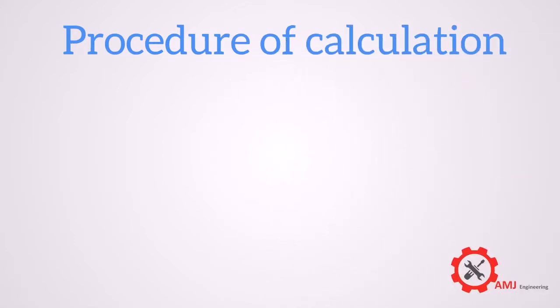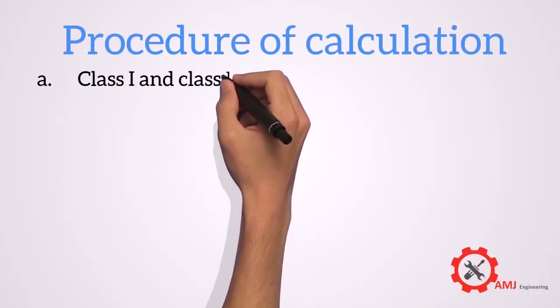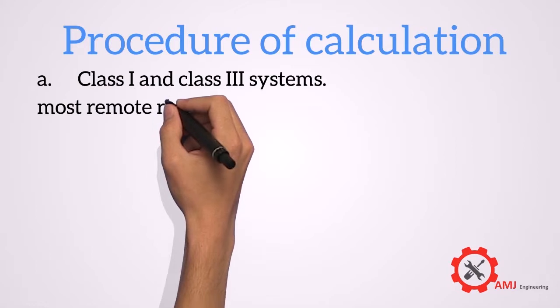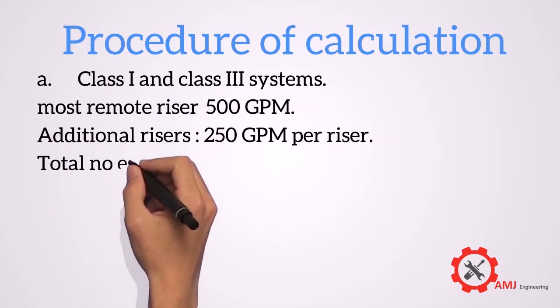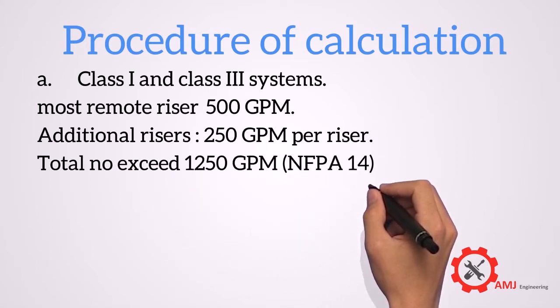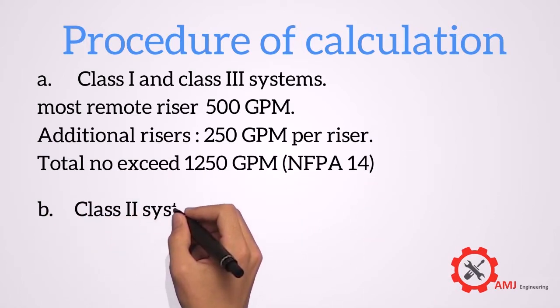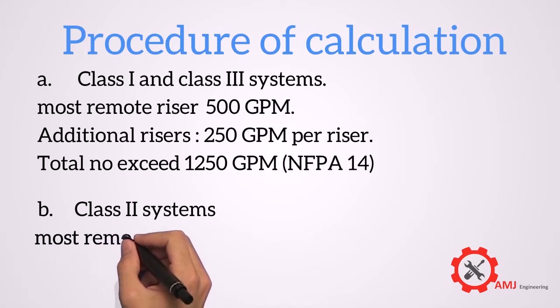Procedure of calculation is as follows. For class 1 and class 3 systems, the minimum flow rate for hydraulically most remote riser shall be 500 GPM. The minimum flow rate for additional risers shall be 250 GPM per riser, the total not to exceed 1250 GPM.